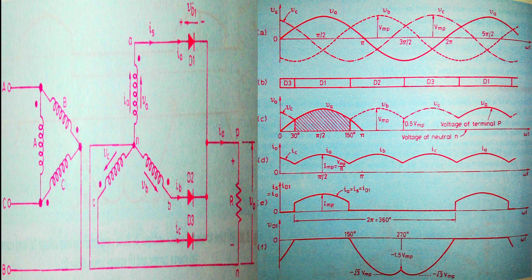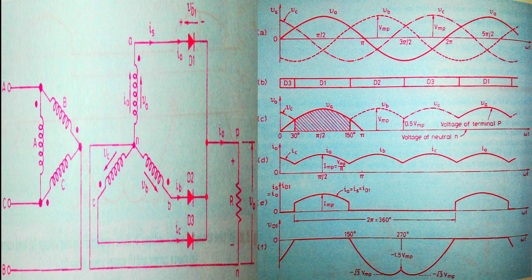In waveform part A we have waves of all three phases. At any point in time, one phase has the highest positive voltage while the other two have lesser voltage. For example, from ωt = 30° to ωt = 150°, phase A has the highest positive voltage. From ωt = 150° to 270°, phase B has the highest positive voltage.